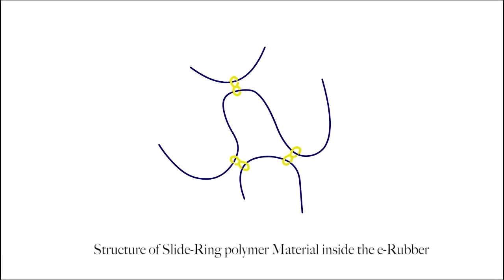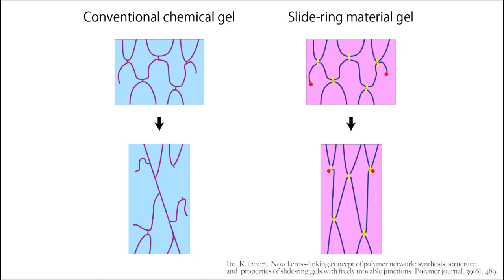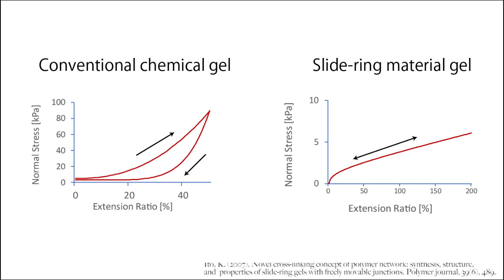The SRM inside the E-Rubber is a polymer material whose cross-linking point is H-shaped and can move freely. On the other hand, the cross-linking points of conventional polymer materials are fixed. As a result, SRM has unique characteristics of small hysteresis loss and small pre-stretching, unlike conventional polymer materials.